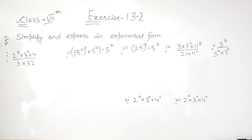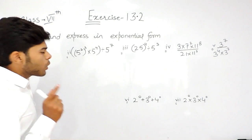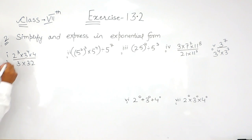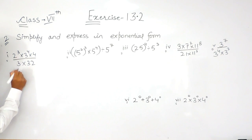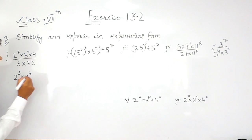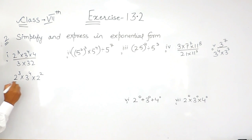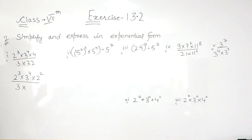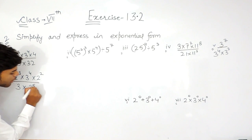First of all, in order to simplify these type of questions, we will convert them in their prime factorization — we find the prime factors raised to the powers. So 2 to the power 3 can be written as it is, 3 to the power 4 can be written as it is. But 4 can be written as 2 to the power 2, because we will be writing them in their prime factorization form. Then 3 will be as it is, then we will do the prime factors of 32. You can solve it, or I can directly write it: 2 to the power 5.